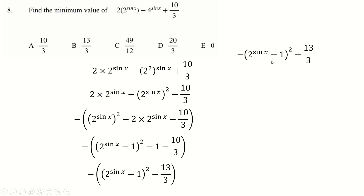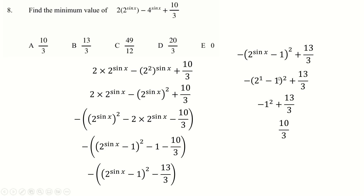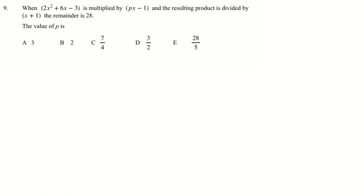It's tempting to say this negative bracket can be made massively negative, but 2^(sin x − 1) is capped. If sin x = 1, then 2^(1−1) = 1, so 1² = 1, giving minus 1 plus the rest. Testing the other end: if sin x = minus 1, 2^(−1) = ½, and (½ − 1)² = ¼ — but we're subtracting less, so that's a higher value. Therefore the minimum occurs at sin x = 1, and the answer is 10/3.